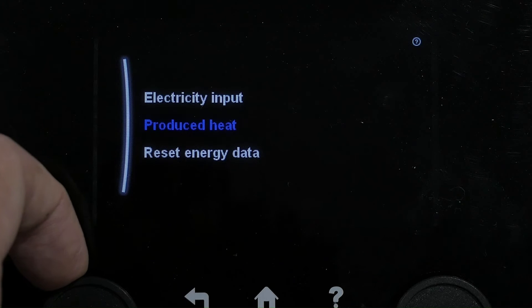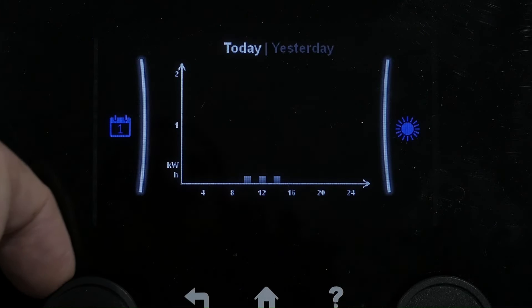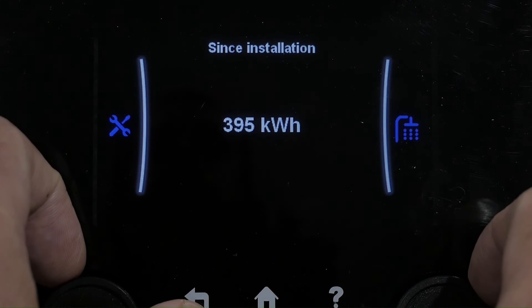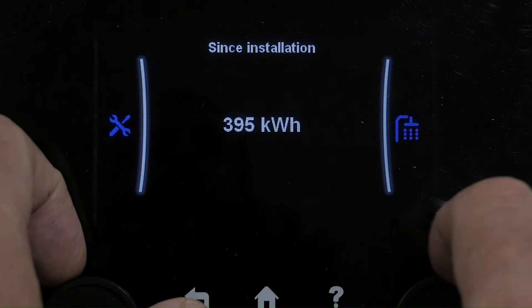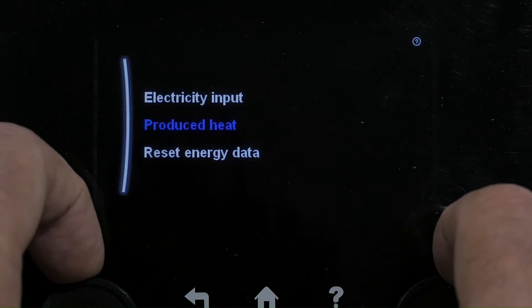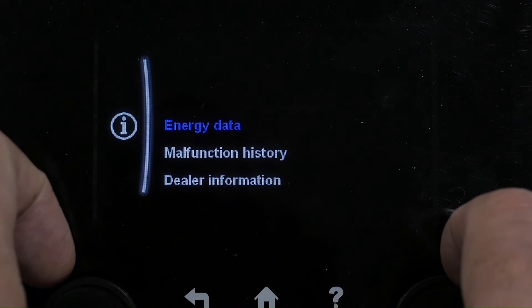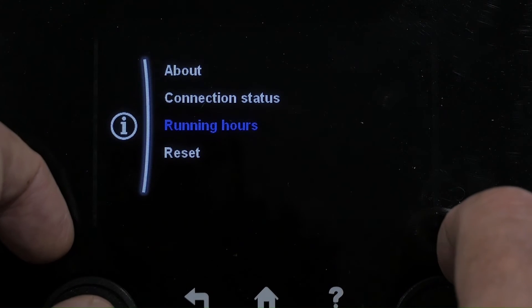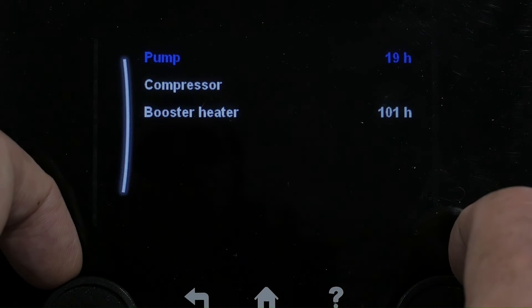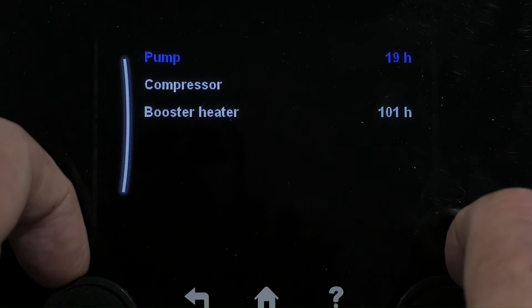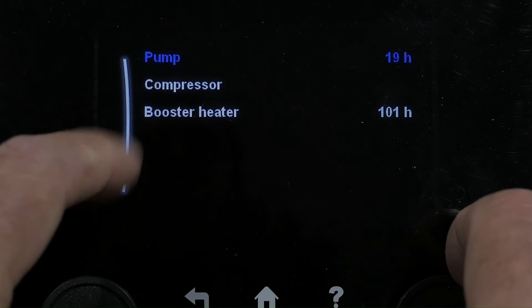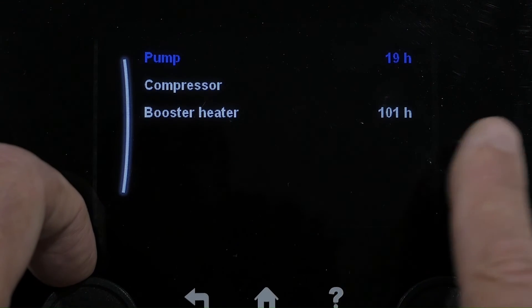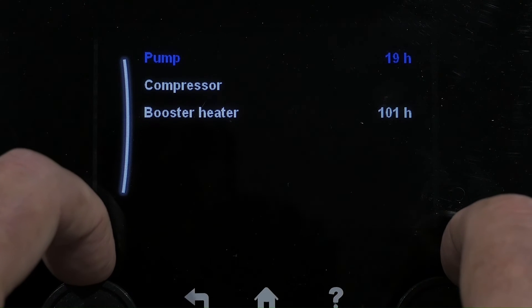You can also look for the running hours on the electricity input screen. Here we can see the pump's been on for 19 hours, and the compressor and boost heat have been on for a long time. This helps give you an indication if you've got poor running costs as to what's going on.